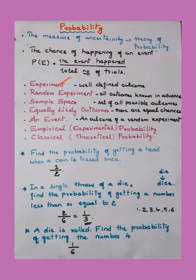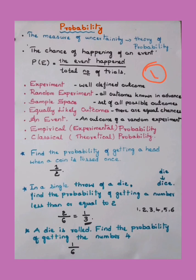Experiment is nothing but a well-defined outcome. For example, if you toss a coin, the outcome will be either head or tail. Since the outcome is well-defined, that is called an experiment.